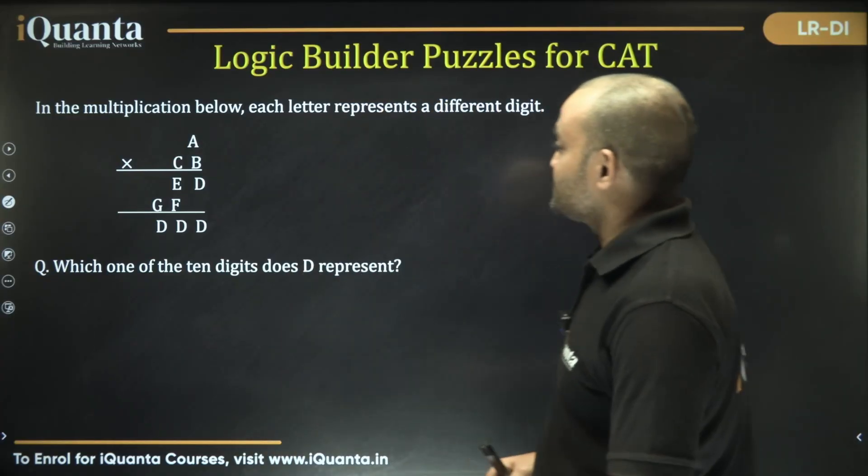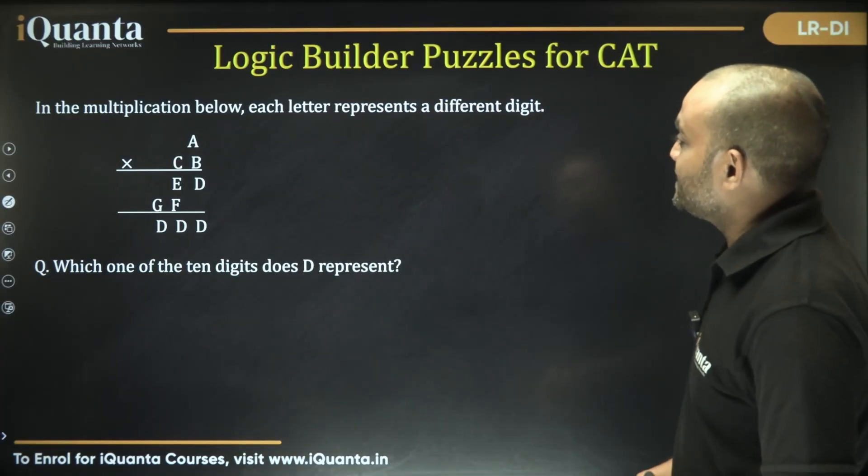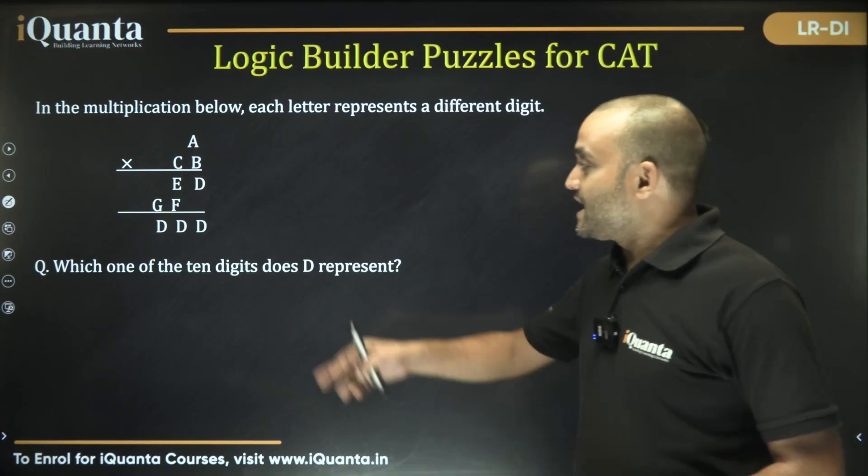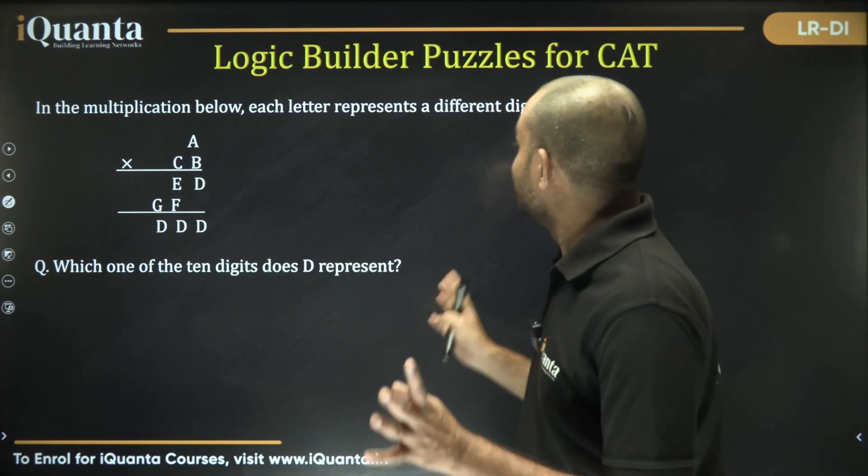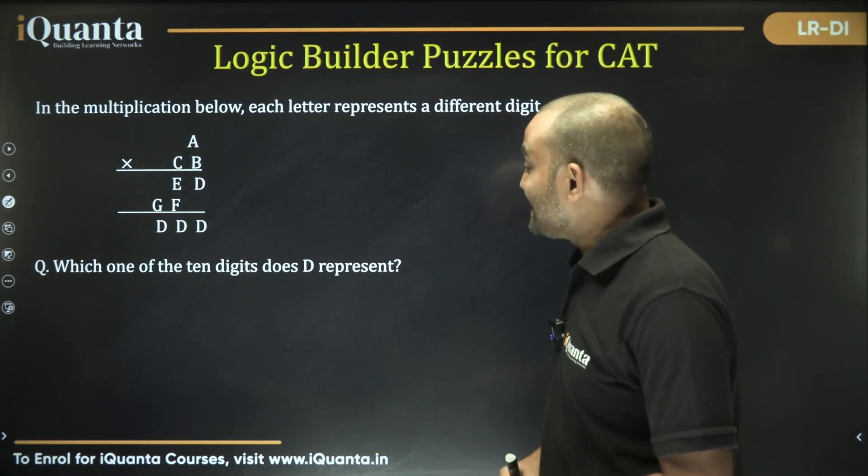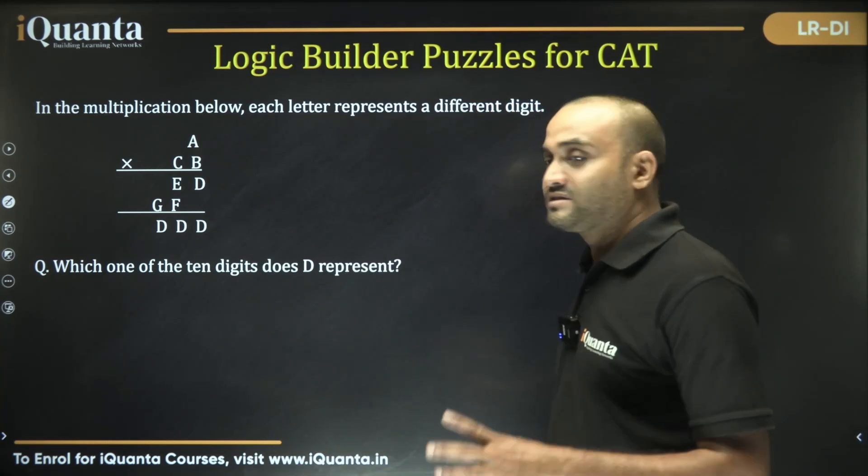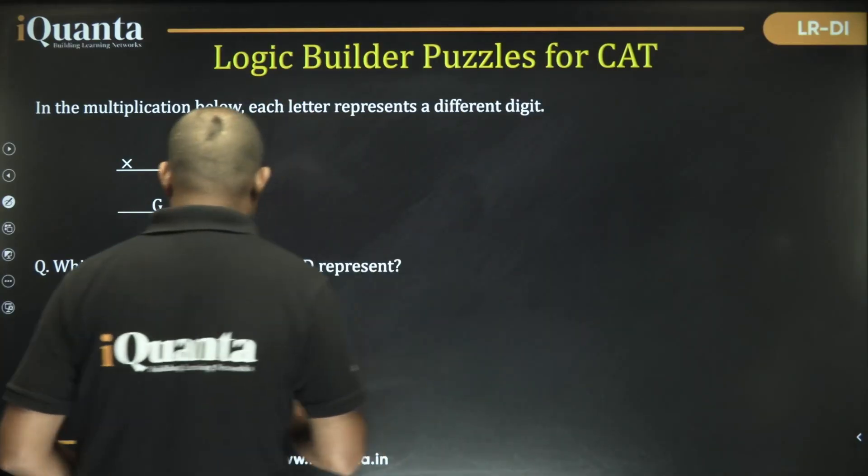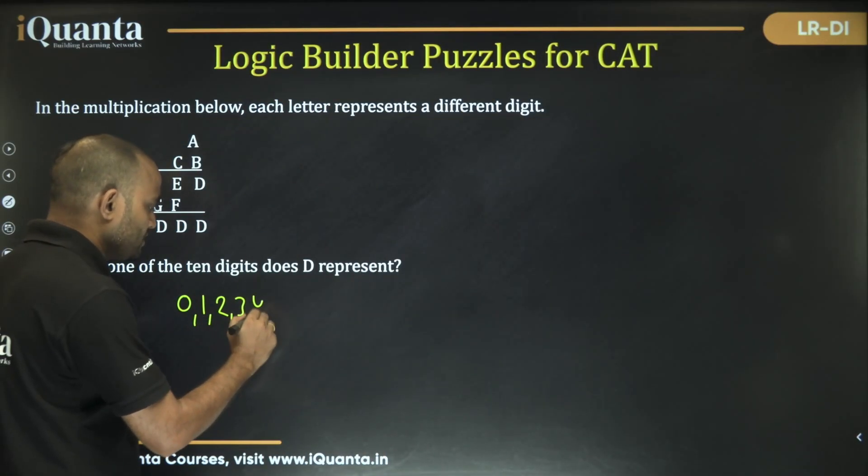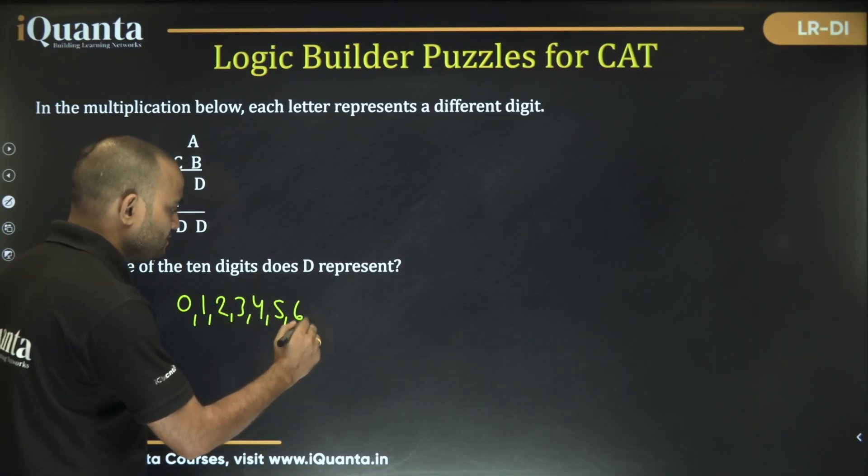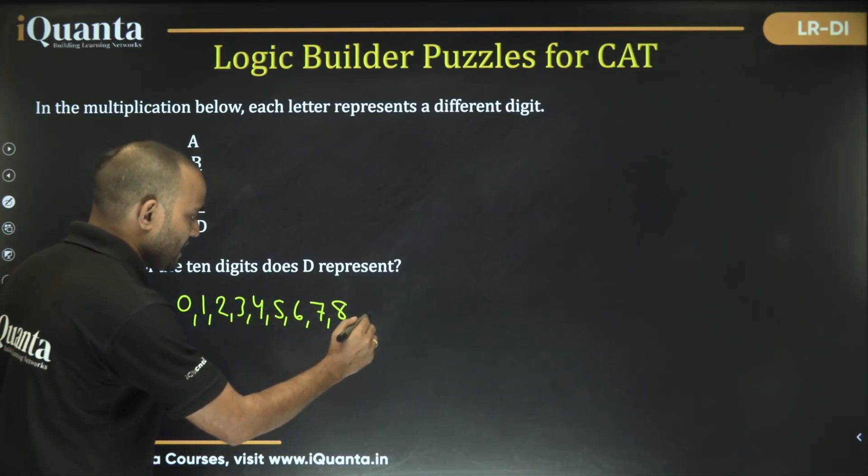So this question says in the multiplication below, each letter represents a different digit: A, B, C, D, E, F, G—all of these are distinct digits. Which one of the ten digits does D represent? Ten digits means we are talking about digits 0, 1, 2, 3, 4, 5, 6, 7, 8, and 9.